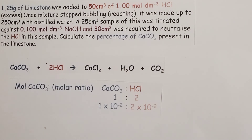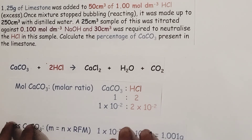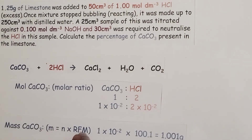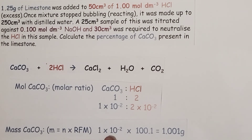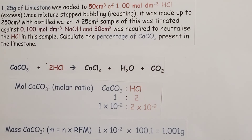At this point, we can convert that into a mass. Mass equals moles times the relative formula mass of the substance involved — in this case calcium carbonate. So 1 × 10⁻² moles times 100.1 — that's 40 for calcium, 12 for carbon, and 16 × 3 for the three oxygen atoms in the formula of calcium carbonate — gives us a mass of calcium carbonate in the limestone of 1.001 grams.